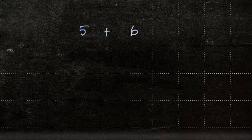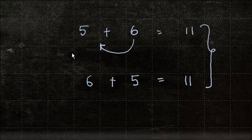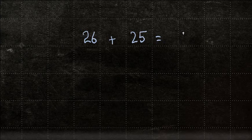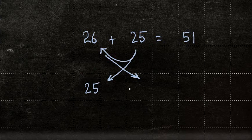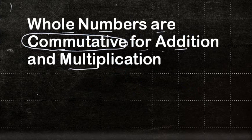Let's take some examples. If I add five plus six, what is the answer? I get 11. If I change the order and I do six plus five, the answer is again 11. Let's do another one: if I have 26 plus 25, I get 51. If I change the order and do 25 plus 26, the answer is again 51. In other words, changing the order of two whole numbers under addition does not make any difference, and we say that the whole numbers are commutative for addition.